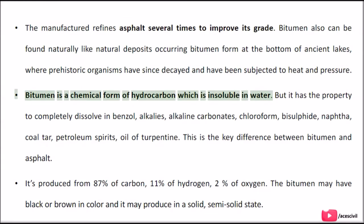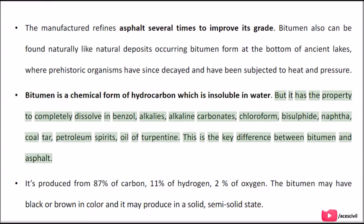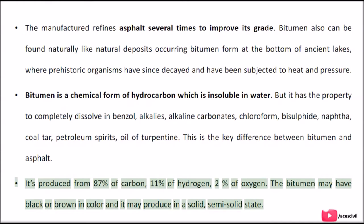Bitumen is a chemical form of hydrocarbon which is insoluble in water, but it has the property to completely dissolve in benzyl, alkalis, alkaline carbonates, chloroform, bisulfide, naphtha, coal tar, petroleum spirits, and oil of turpentine. This is a key difference between bitumen and asphalt. It is produced from 87% carbon, 11% hydrogen, and 2% oxygen.